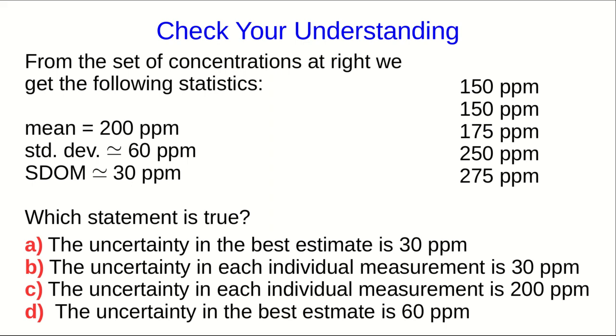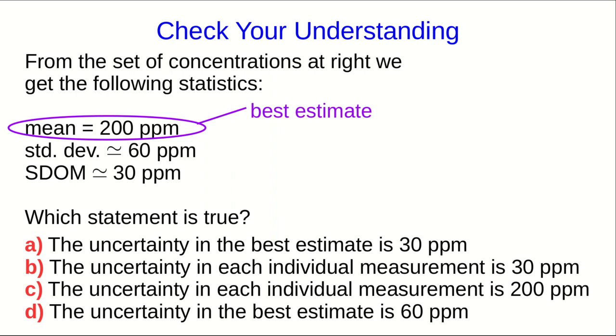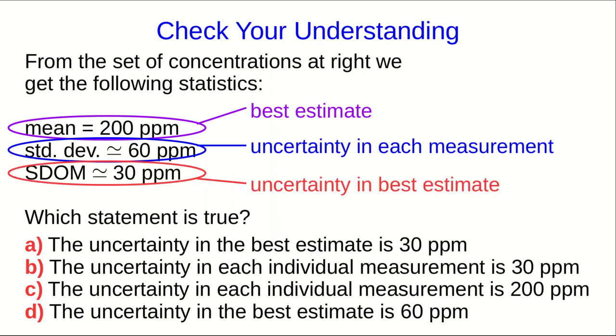How did you do at this question? You really just needed to look back at the previous lectures and see that the interpretation of these quantities is that the mean is the best estimate, the standard deviation is our estimate of the uncertainty in each individual measurement, and the standard deviation of the mean is the uncertainty in the best estimate. The correct answer is a, the uncertainty in the best estimate is 30 parts per million.